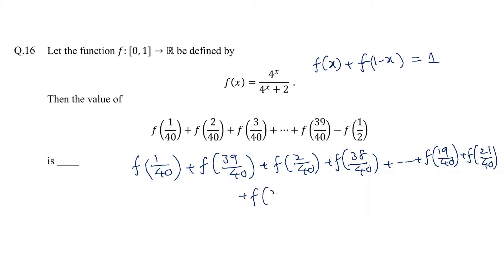The remaining term is f(20/40), and the question gives minus f(1/2). So f(1/2) - f(1/2) is what we get. Since f(20/40) equals f(1/2), these terms cancel out.